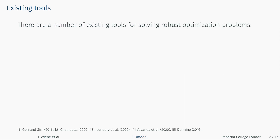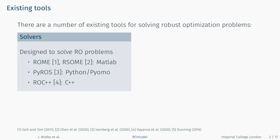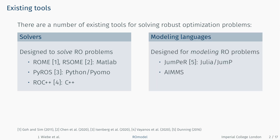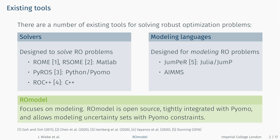There already exist a number of tools for modeling and solving robust optimization problems, generally falling into two categories. The first category includes tools primarily designed for solving robust optimization problems, such as Roam and Arzome (MATLAB-based), Pyros (a Python/PyOMO-based solver using a generalized cutting set approach for non-linear problems), and Rock++ (a C++ based solver). The second category focuses more on modeling, including Jumper (an extension to Jump in Julia) and AIMS, which also has some robust optimization capabilities.